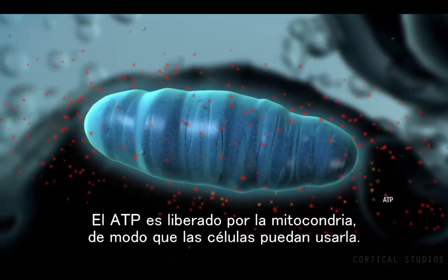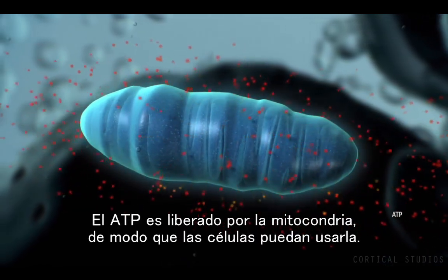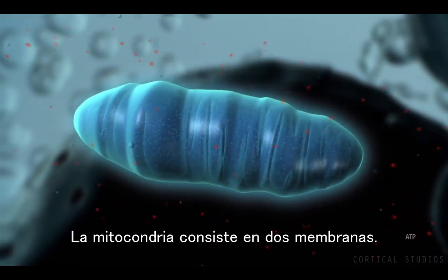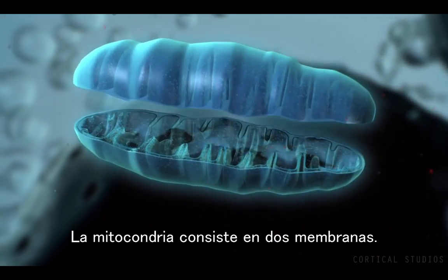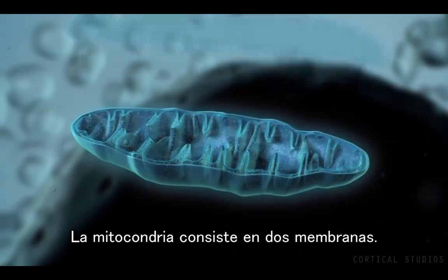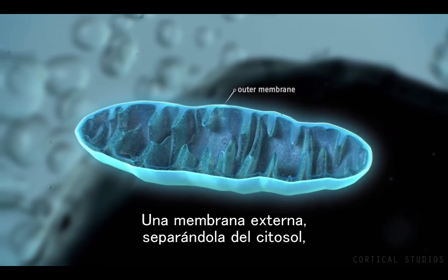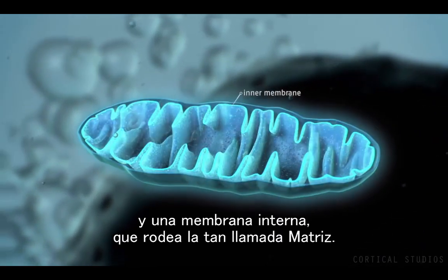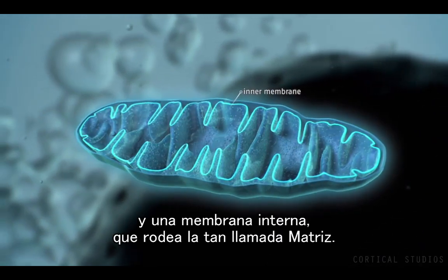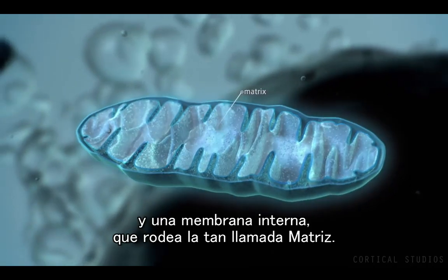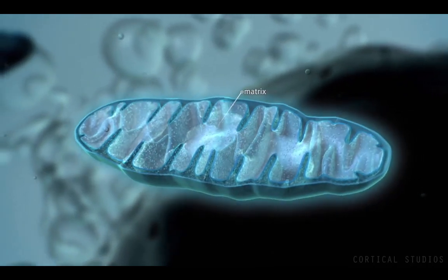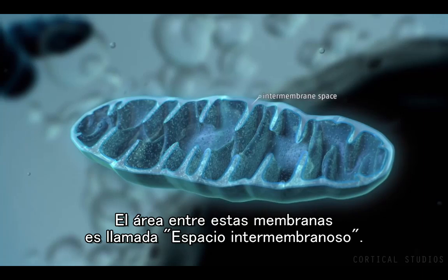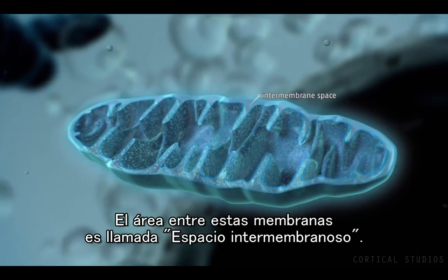ATP is released by the mitochondria so cells can use it. Mitochondria consist of two membranes: an outer membrane separating it from the cytosol, and an inner membrane surrounding the so-called matrix. The area between these membranes is called the intermembrane space.